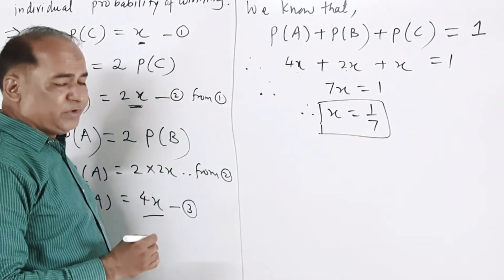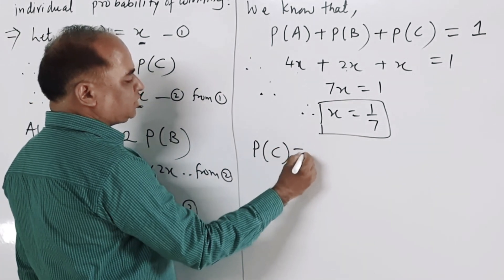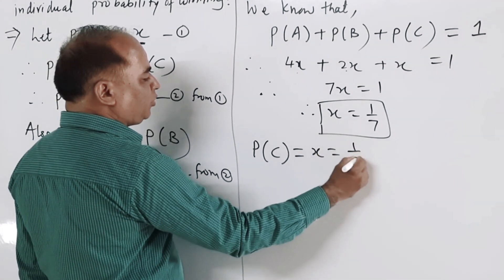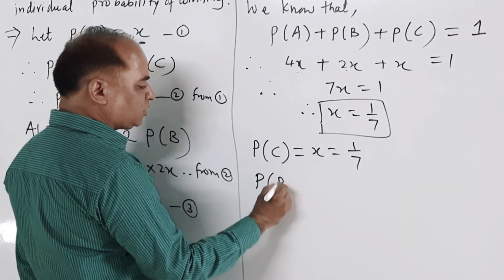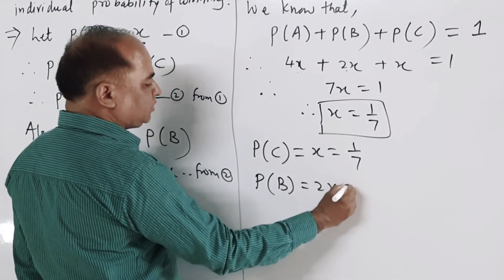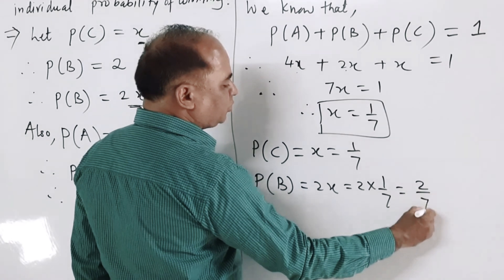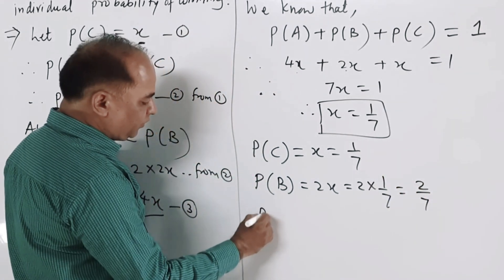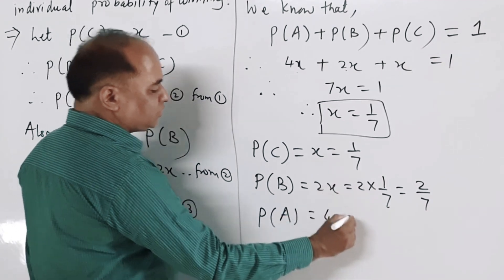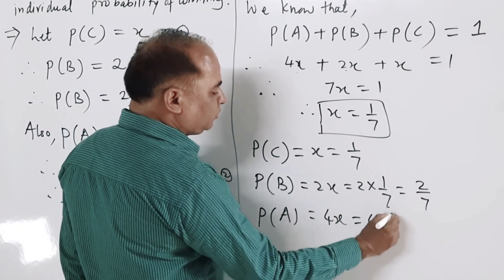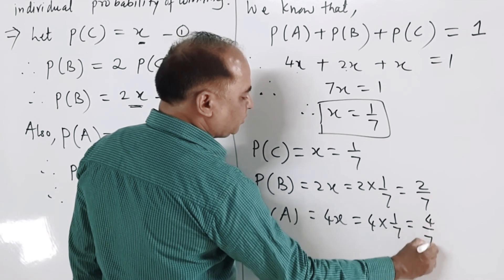Therefore the probability of winning the race by individual horses: probability of horse C is x equals 1 upon 7. Probability of winning by horse B is 2x equals 2 into 1 upon 7, that is 2 upon 7. And probability of winning by horse A is 4x equals 4 into 1 upon 7, that is 4 upon 7.